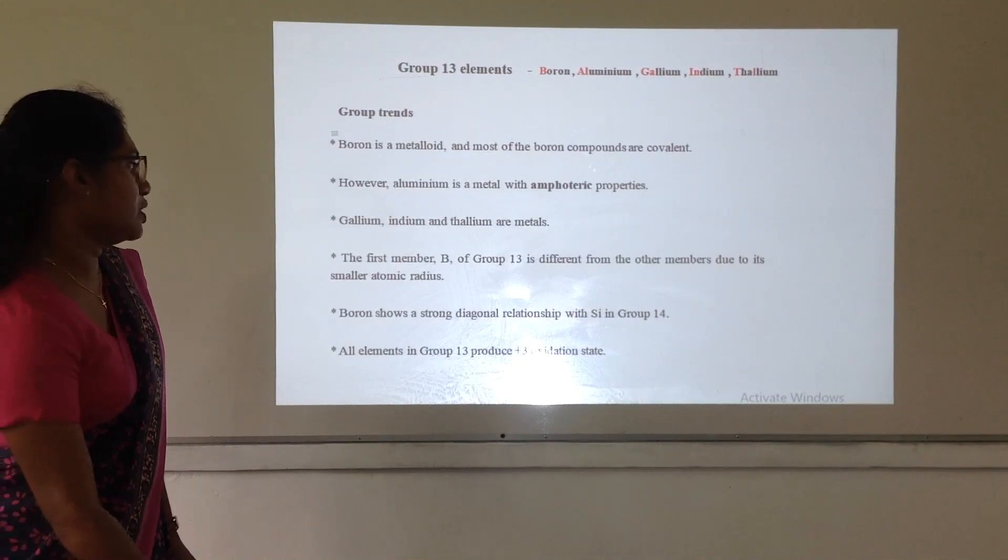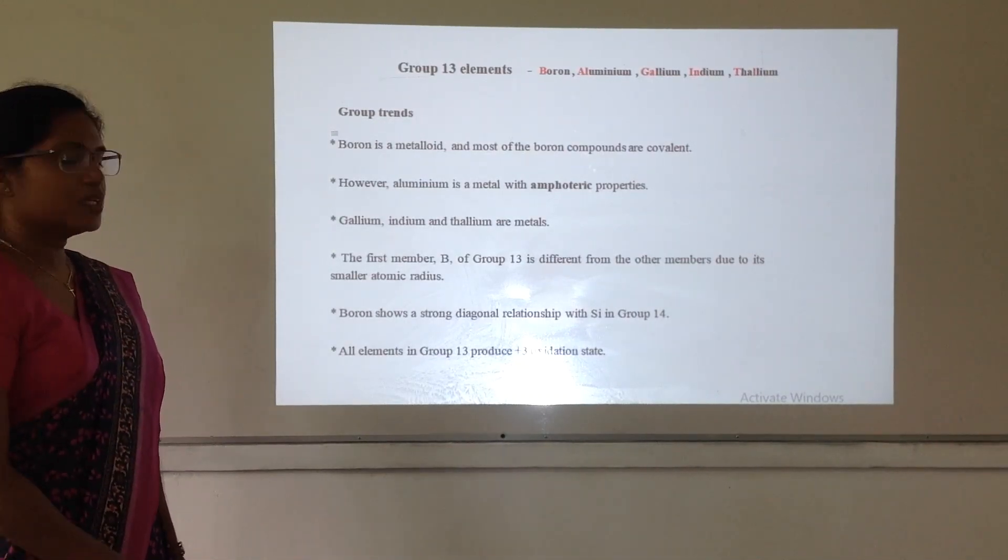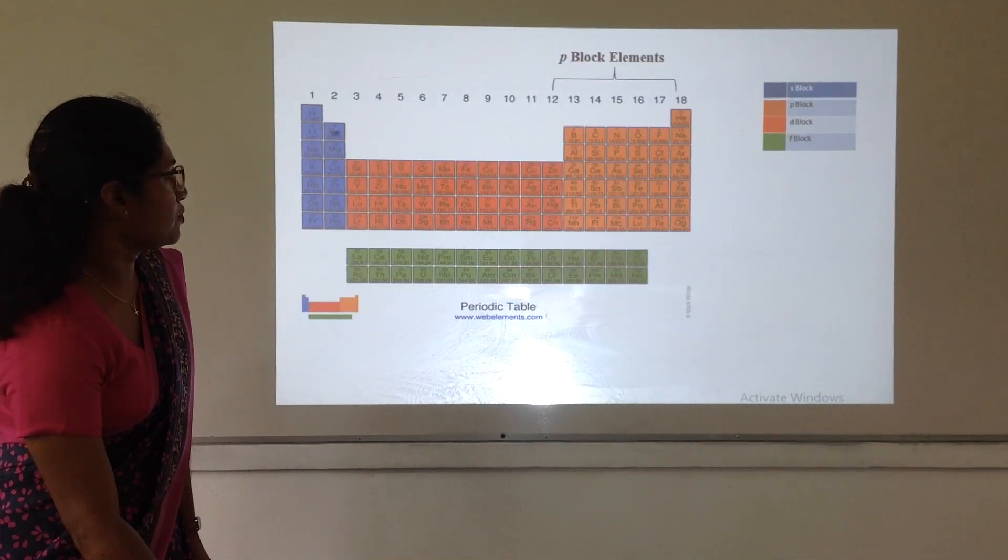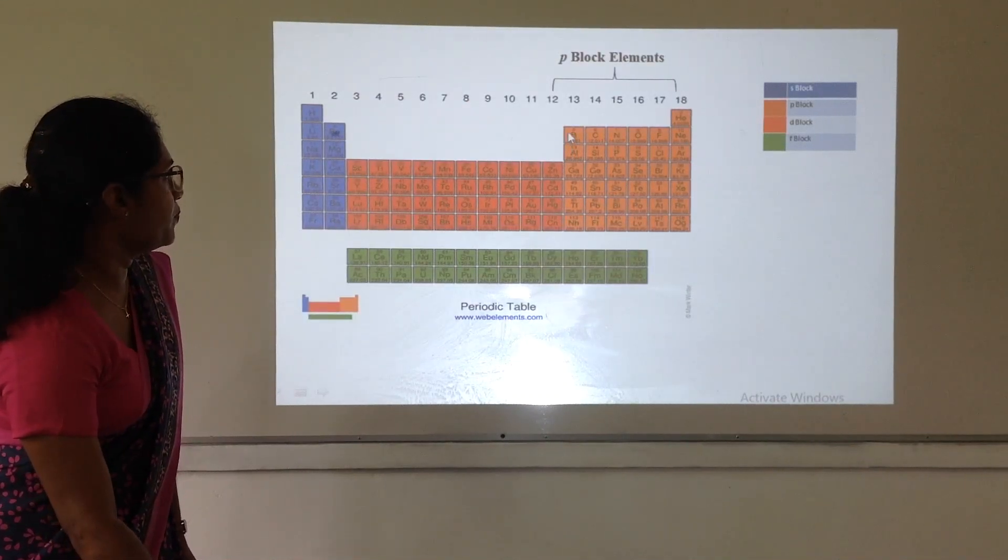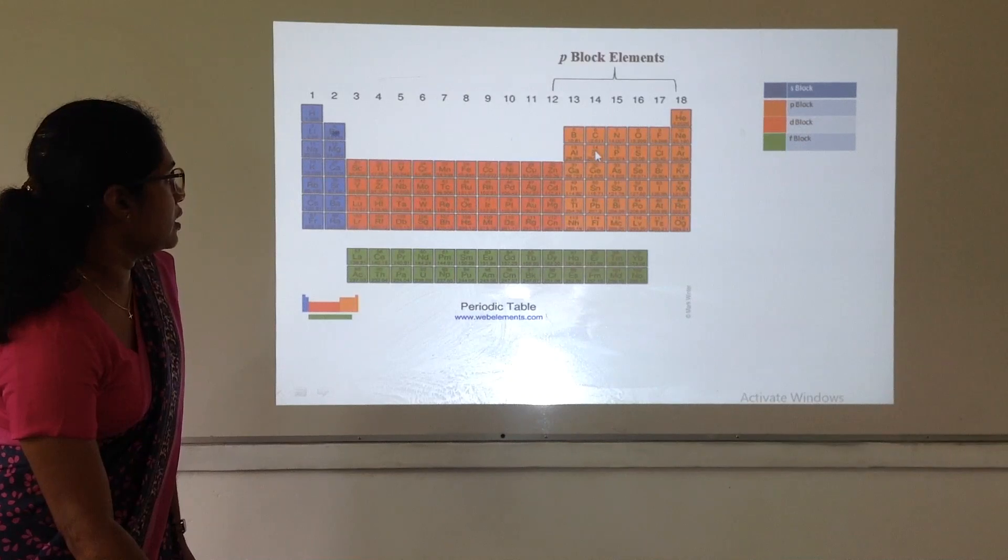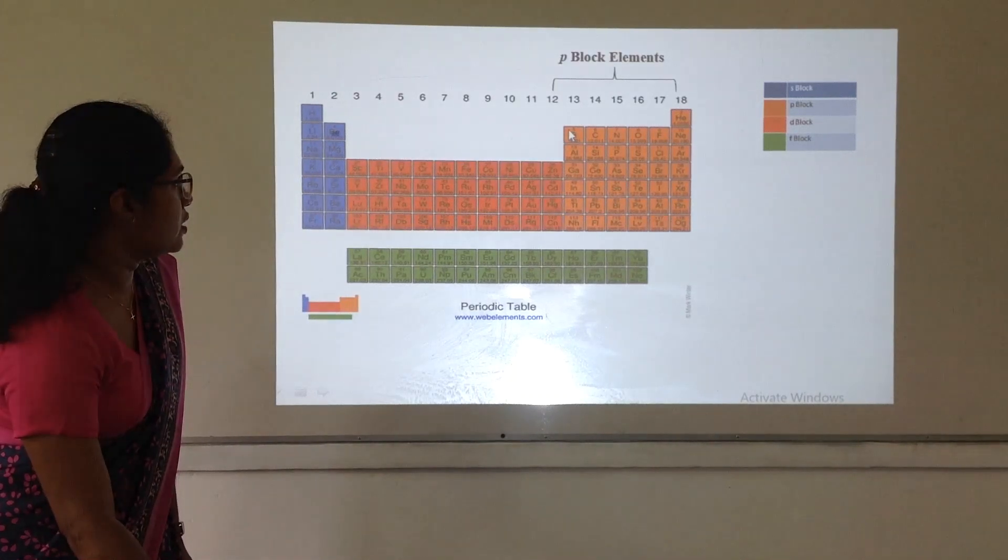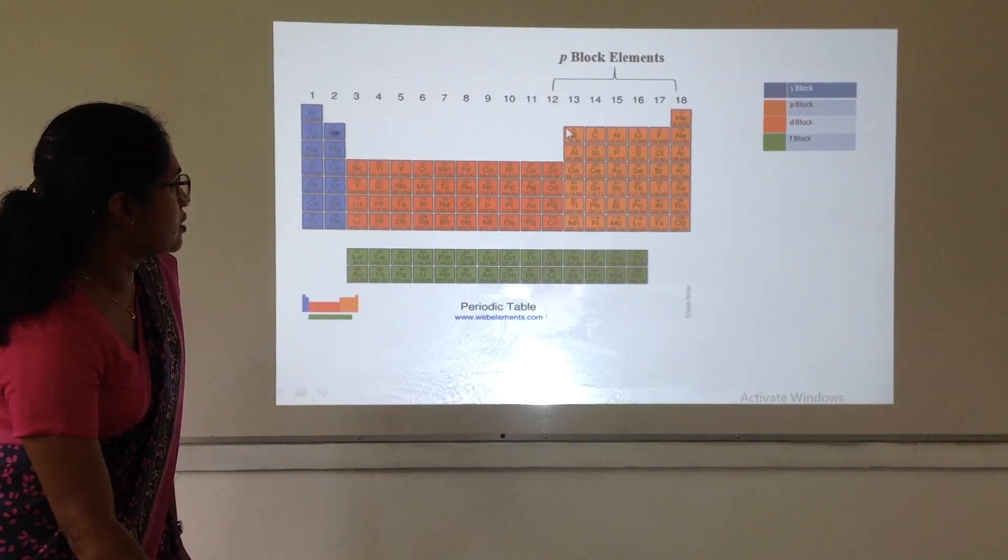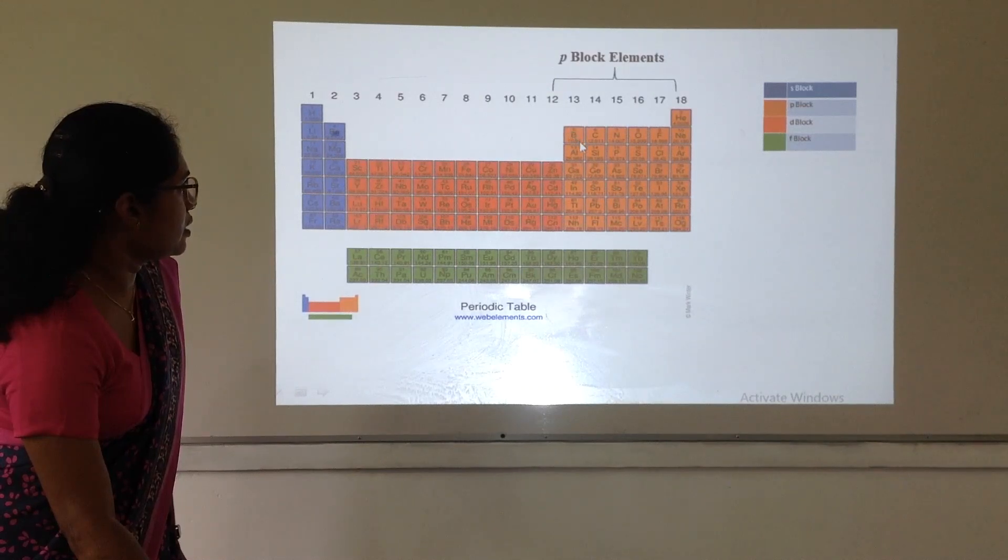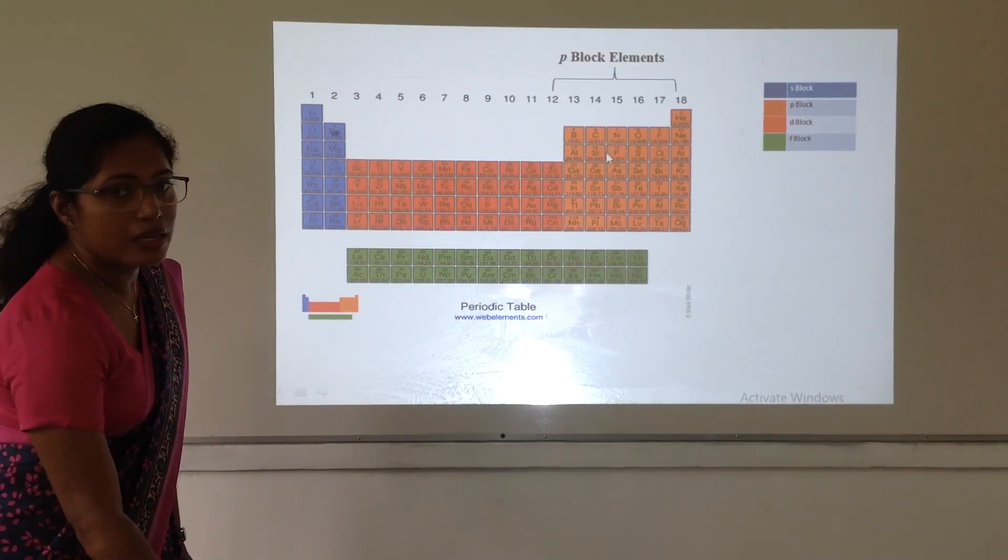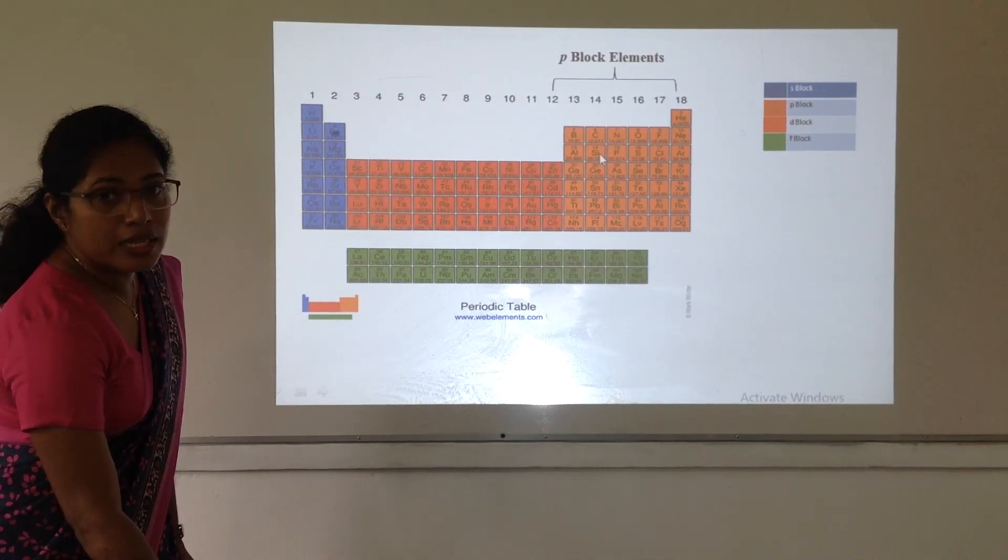It shows different characteristics than the other members because it shows diagonal relationship with silicon. If you see the periodic table, if you take the square from boron, carbon, silicon to aluminium, this is a square. And if we draw the diagonal of this square, it lies on boron and silicon. So, boron and silicon are in that diagonal line. These two elements show same characteristics.